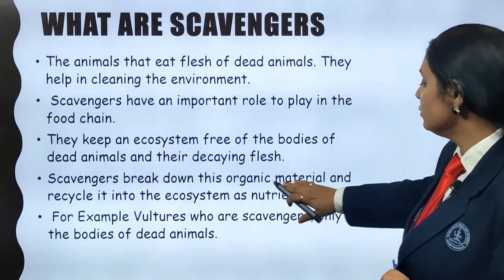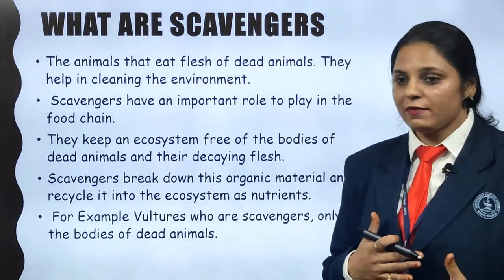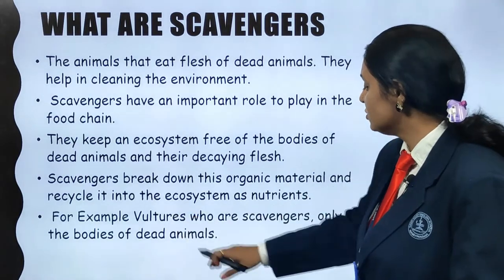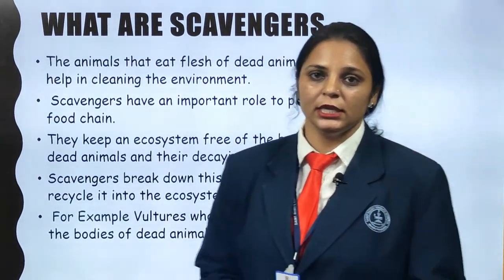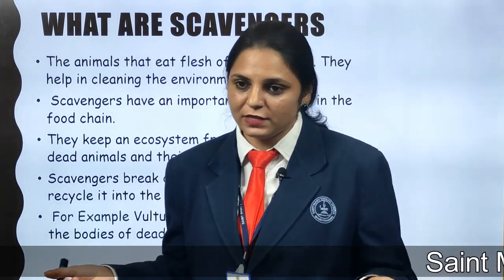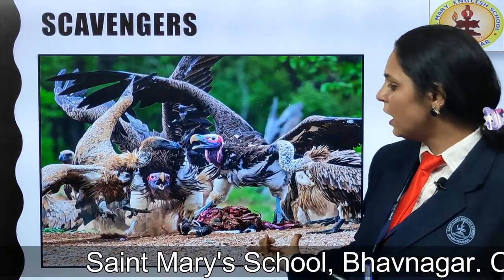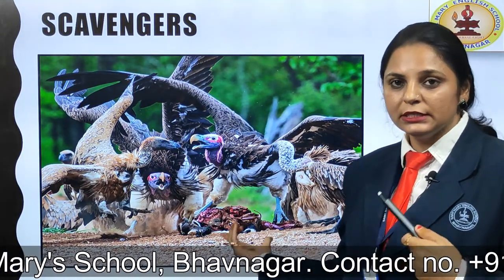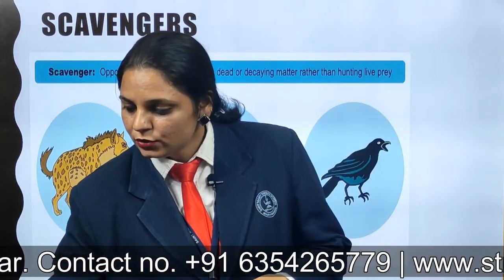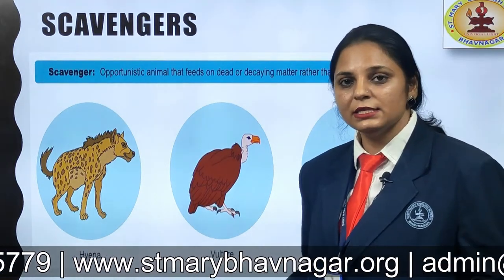Scavengers break down organic material that is recycled into the ecosystem of the environment. Examples are vultures and even crows — they depend on dead decaying matter as well as plant products. This picture will show you how hyenas, vultures, and crows depend on dead decaying matter in the environment and help in cleaning it. All these are scavengers.